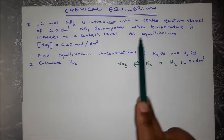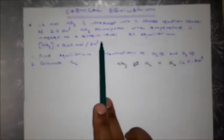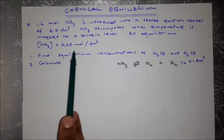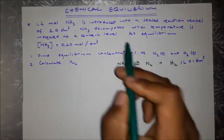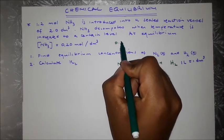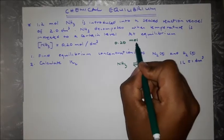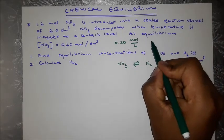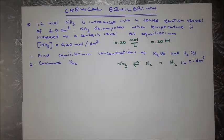So again: 1.2 mol of ammonia is introduced into a reaction vessel of this volume. NH₃ decomposes when temperature is increased to a certain level. At equilibrium, we find that NH₃ has a concentration of 0.20 mol per dm³ — which is the same as 0.20 mol per liter or mol/dm³.